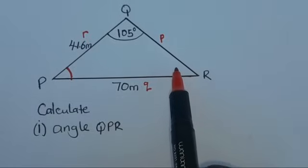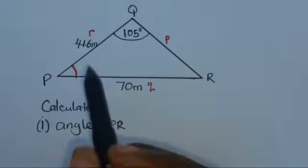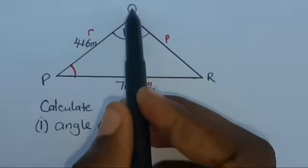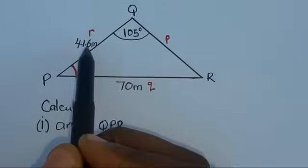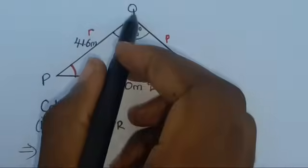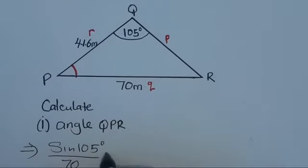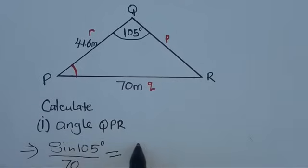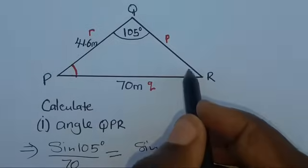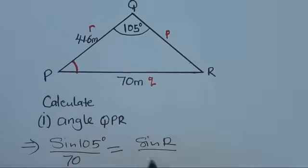We are going to use the properties of the sum of angles in a triangle alongside the sine rule, because we have a complete path and a half path. So we write: sine 105° over its opposite side 70, equals sine R over the given side 41.6. Our aim is to find angle R, which then helps us find angle QPR.